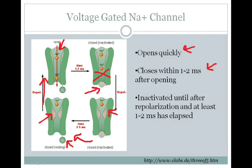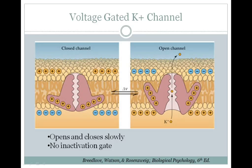The voltage-gated potassium channel is also gated by voltage, so once the membrane potential goes above threshold it will open, and when it returns below threshold it will close. There is no inactivation gate on this channel — it just depends on membrane voltage. This channel opens slowly and closes slowly. Once it goes above threshold, it takes at least a millisecond or so to open, and it will close a little bit after the membrane has been repolarized to rest. That is what mediates the undershoot or hyperpolarization phase of the action potential.